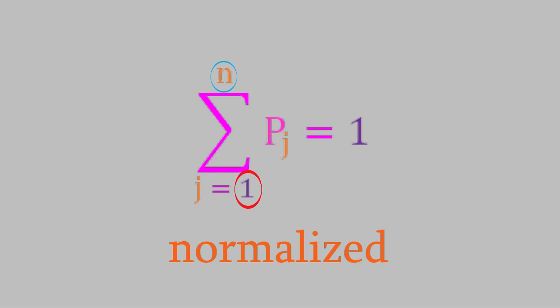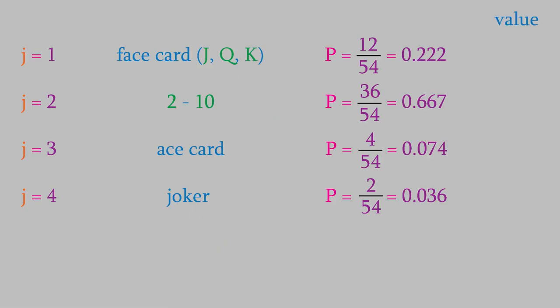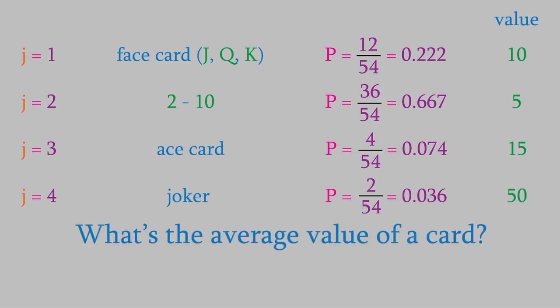Now, let's look at a more complex question. Suppose that the cards in each group have different values, which we'll symbolize by the letter x. For example, suppose a face card is worth 10 points, the cards between 2 and 10 are worth 5 points, aces are worth 15, and the jokers are worth 50. If we choose a card at random, what will be its average value? This is another kind of problem you've probably solved before, but you may not have thought too much about the mathematics. There's a different probability of getting a card with each of the possible values, so to determine the average value, we need to take a weighted average of the value of each card. In this case, there's a 0.222 probability that we'll get a result with a value of 10, a 0.667 probability that our result will have a value of 5, a 0.074 that it'll have a value of 15, and a 0.036 probability that it'll have a value of 50.